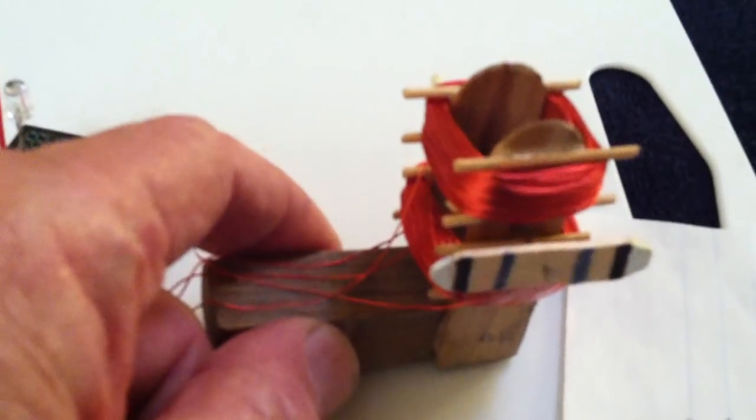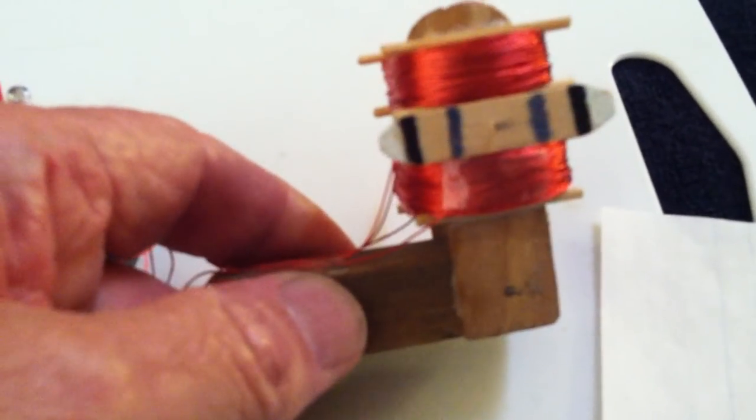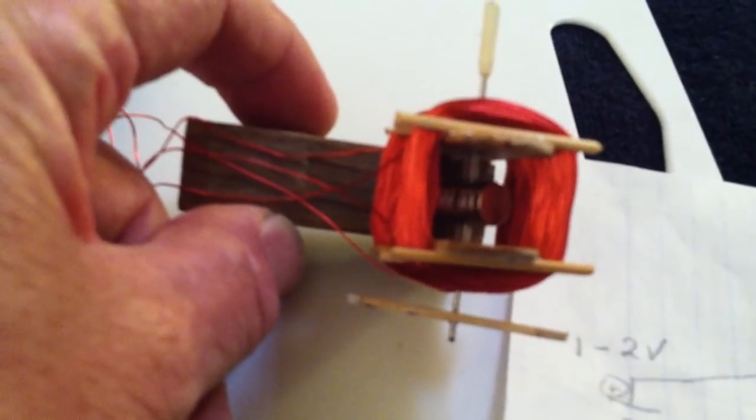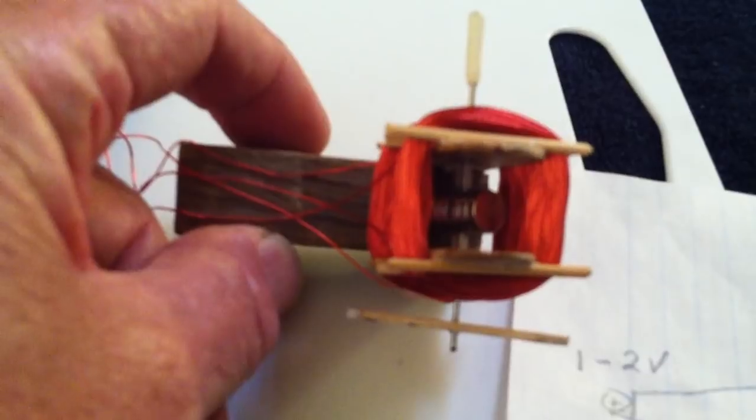you cut off the end of the round toothpicks and glue them on that tongue depressor, mount it on a little piece of wood, and then he built up a little rotor, like a Neumann motor rotor, with magnets in a north-south configuration.